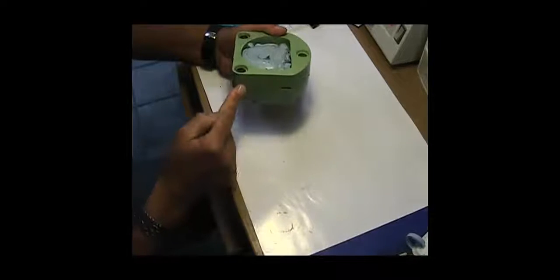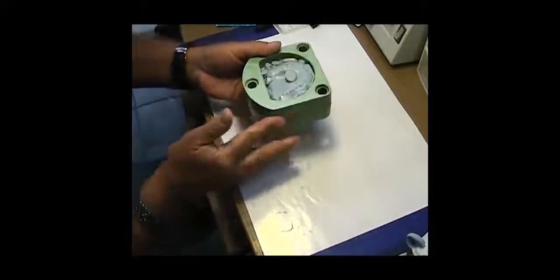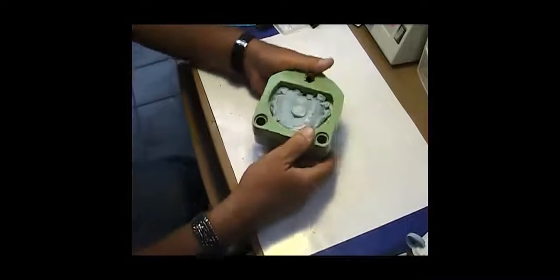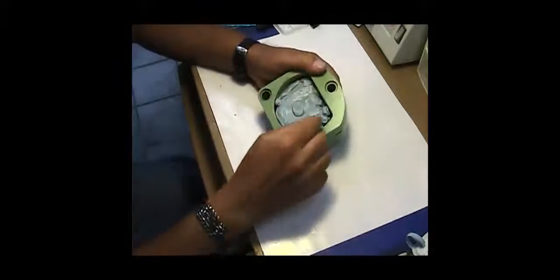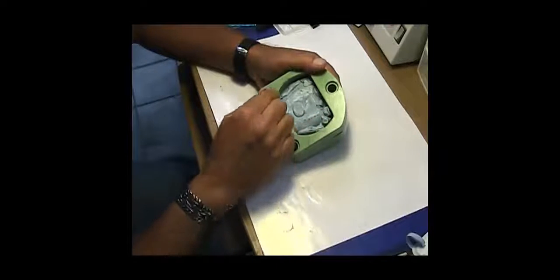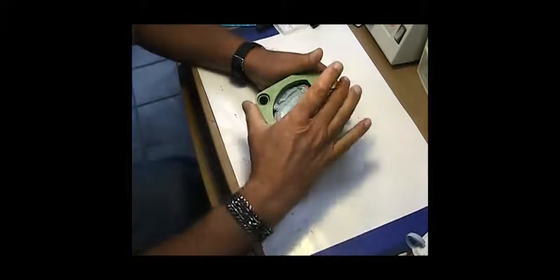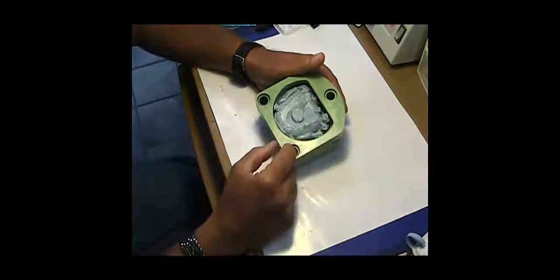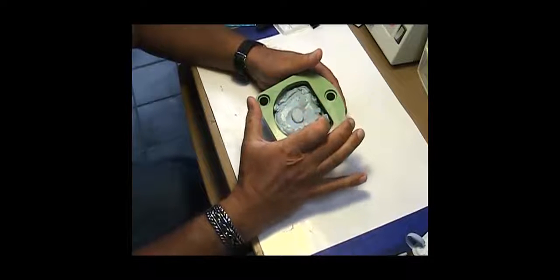We would call it metal to metal if it was a metal flask, so we'll say it's plastic to plastic because this is a plastic flask. Because it's tight in this area, I'll pre-pour some stone in and around here before I put the cap on and screw the bolts down.